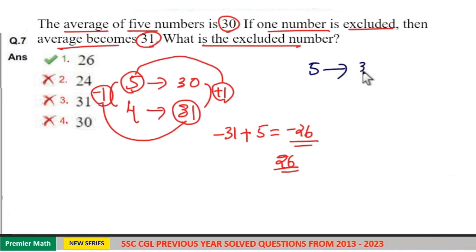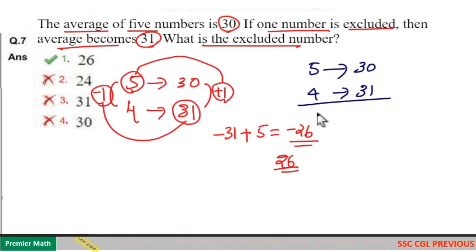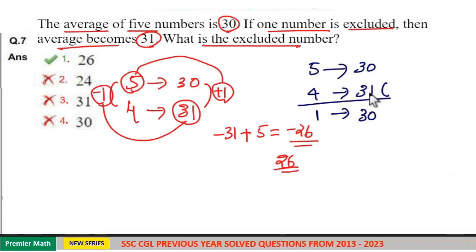Now take the common average to find the excluded number. Take the common average here, common average is 30. Now you can see here this is 31. 31 is 1 greater than common average 30.